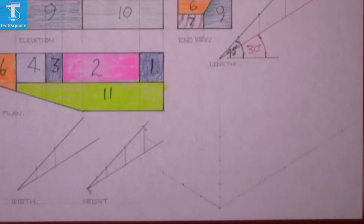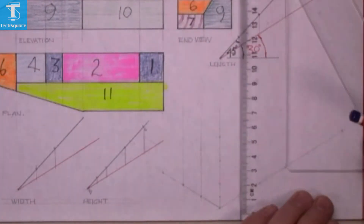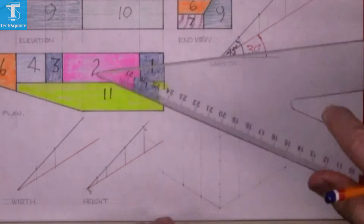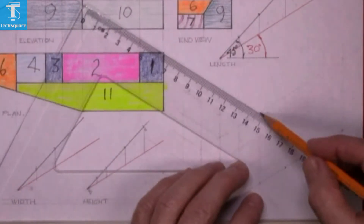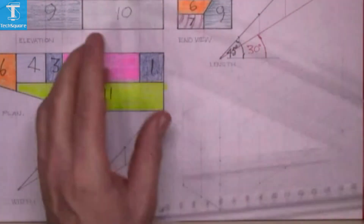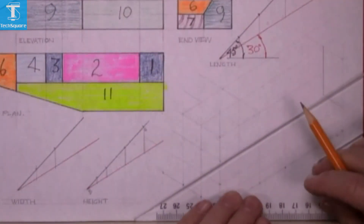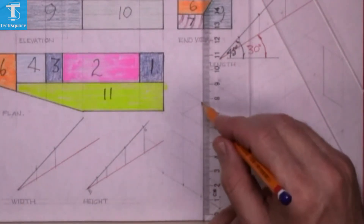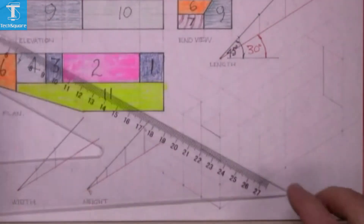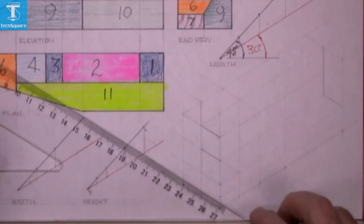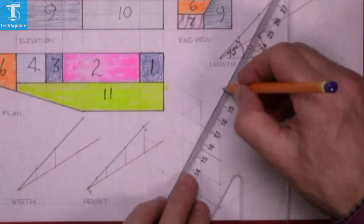And now lining in the points using a 30 degree set square — just lining in light lines. So it's the box or cage that the model will fit into. That's the first heavy line there now. And now the end of the piece here. That's the slope at the front there. And again the slope on the top piece.